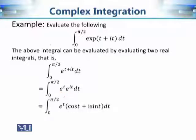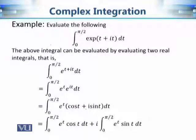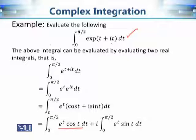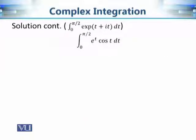This gives us two real integrals: the first is the integral of e^t · cos t from 0 to π/2, and the second is the integral of e^t · sin t from 0 to π/2. To evaluate the original complex integral of e^(t + i·t), we need to evaluate these two real integrals. We will focus on the first integral; the second will be left as an exercise.